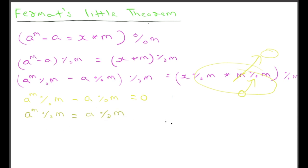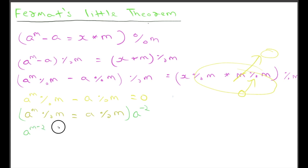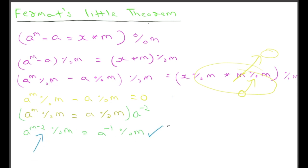If we multiply A to the power minus 2 on both sides, then it will be equal to A to the power M minus 2 modulo M. So we are done — if we calculate A to the power M minus 2 modulo M, we can calculate the modular inverse.